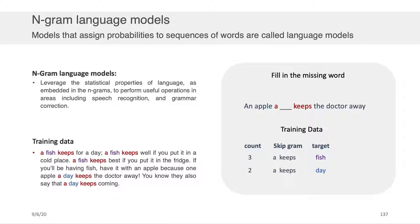In speech recognition, for example, one common thing is you'll have a set of words in a speech-to-text system. When you want to predict, given the speech input, what the next word is, you're going to condition not only based on the audio that you received, but also based on the last several words that you saw. That's where the language model comes into play in a speech recognition system. The right way to understand n-gram language models is with an example.